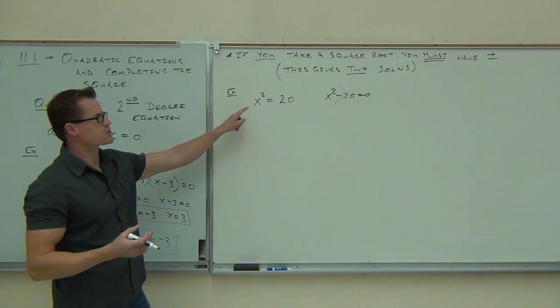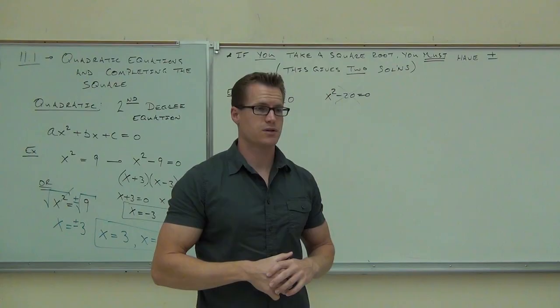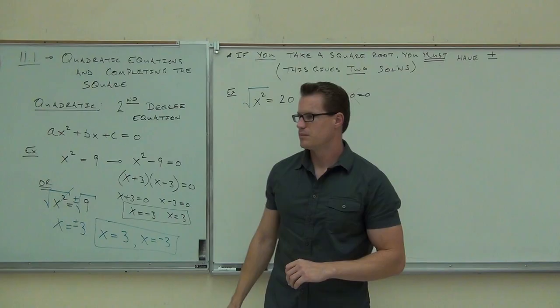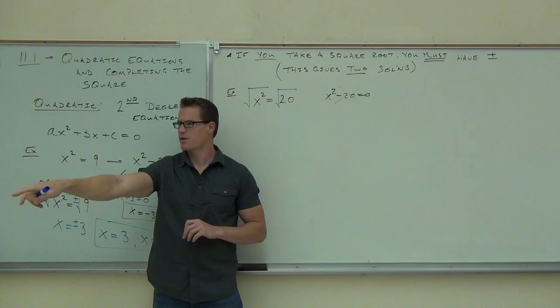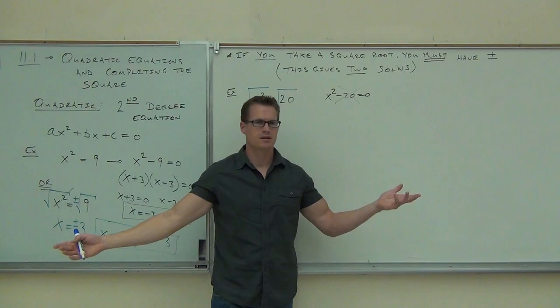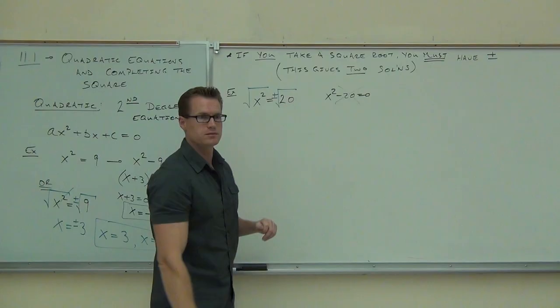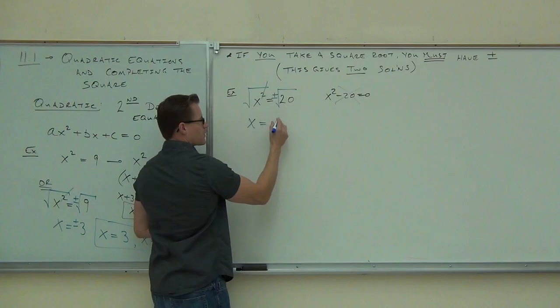So we're going to take the square root of both sides. Is that good enough? No — we need plus or minus. If we don't have plus or minus, we only get one solution, but we need two. On the left side we get x. On the right side we get plus or minus the square root of 20.